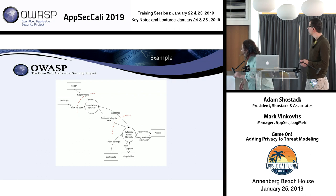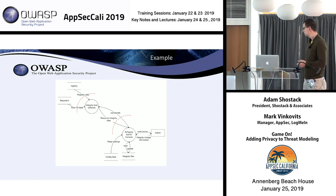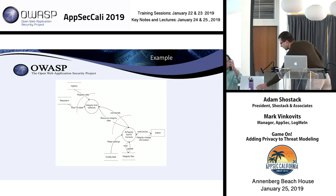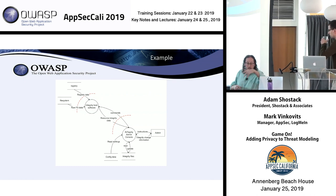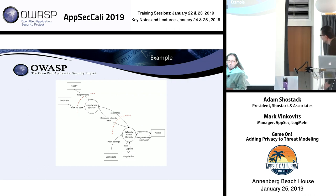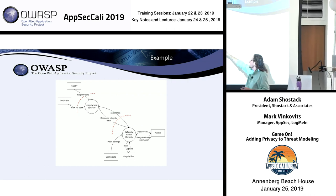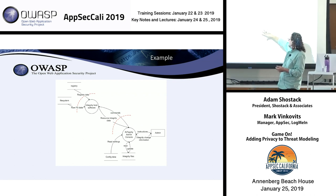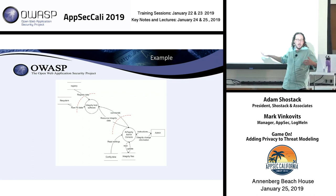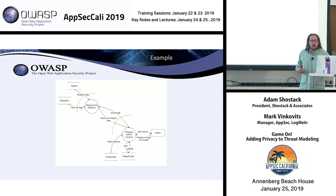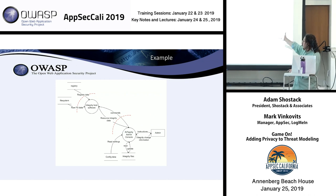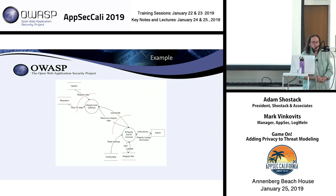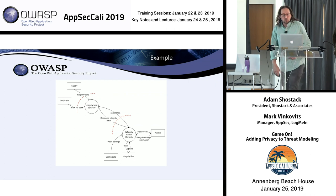Here's a simple diagram — an integrity monitoring system like Tripwire. We've got software out on hosts and software at a console that keeps track of what's going on, what files are being changed, and what our expectations are. We can have a model like this and use it as we play Elevation of Privilege.